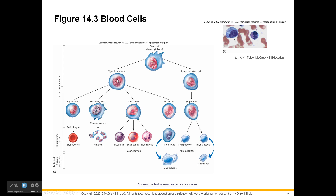Myeloid stem cells produce erythroblasts, which become erythrocytes; megakaryoblasts, which break apart to form platelets; and myeloblasts, which develop into the granulocytes — basophils, eosinophils, and neutrophils. Monoblasts — mono meaning one — give rise to monocytes, which become macrophages.